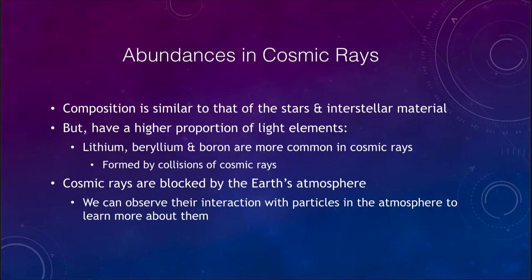When we look at the abundances of things in cosmic rays, they are similar overall, but they have a higher proportion of the light elements — not lighter as in hydrogen and helium, but the three elements in the periodic table that come after hydrogen and helium that are relatively rare: lithium, beryllium, and boron, which are very rare elements in the universe.